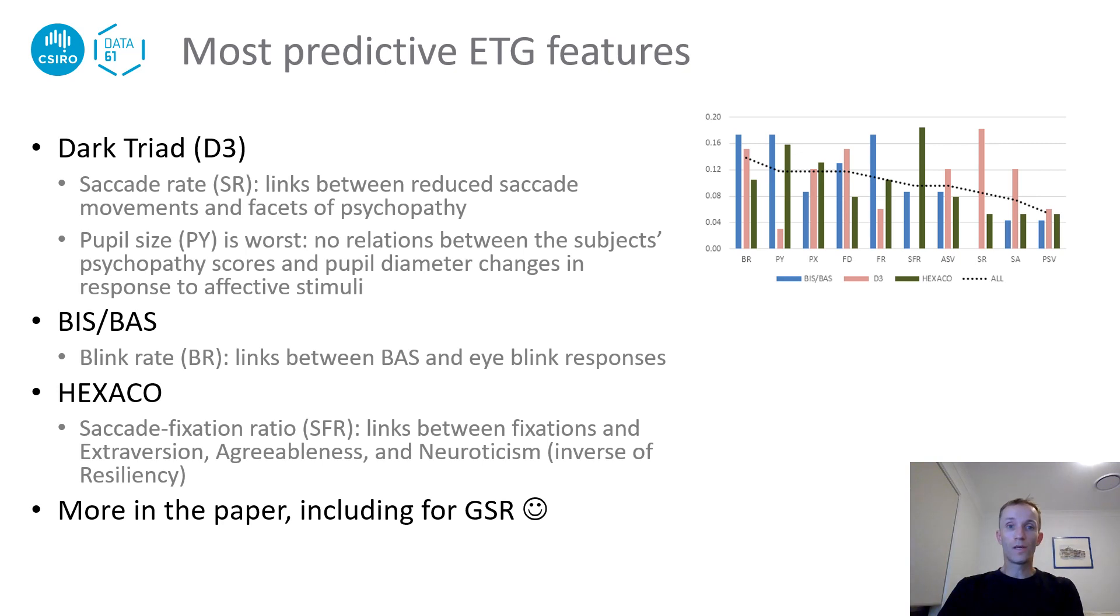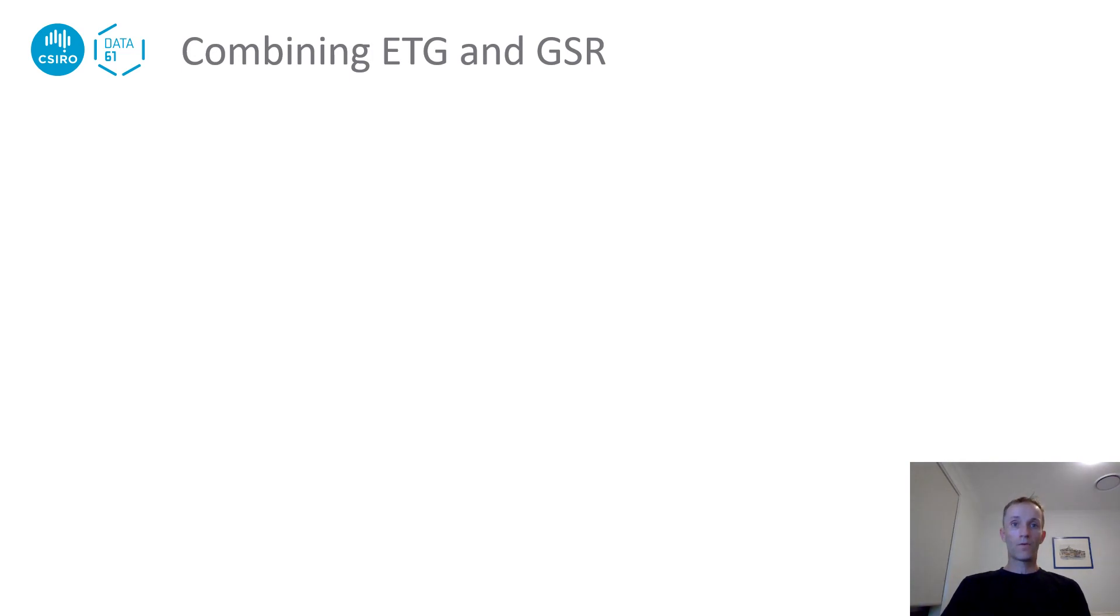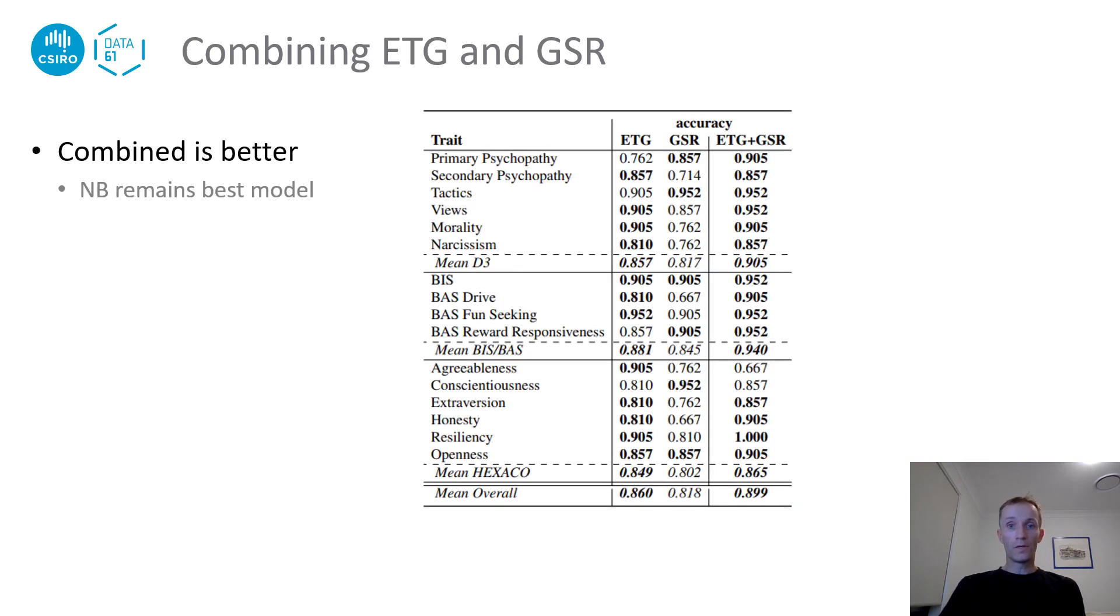So it was truly exciting for us to bridge our findings with past research, and I refer you to our paper for more of these, especially using GSR. Now, can you guess what happened when we combined the ETG and GSR features? The combination further improved the accuracy, also improving results for individual traits almost across the board. In practical terms, this gives practitioners some flexibility around the equipment they need to deploy, since the individual sensors perform well on their own, but the combination can be used when further sensitivity is required.